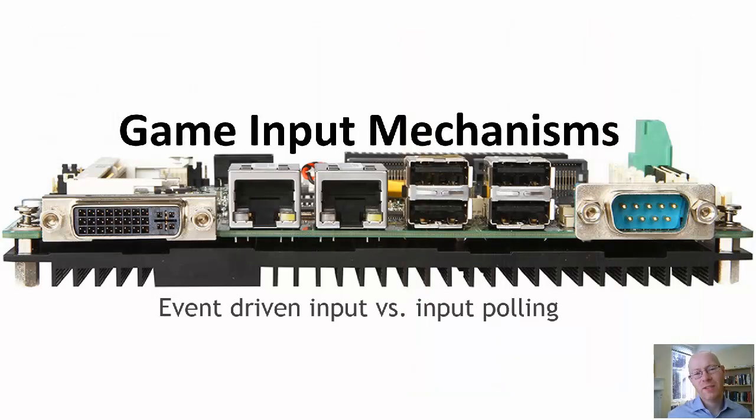We're going to finish this talk up by looking at the notion of how do we process input. There's two broad mechanisms. Input is detected or input happens, but then we're in the process of trying to understand what that input is and what it means and taking some appropriate action. There's two forms to this: event-driven input and the notion of polling.